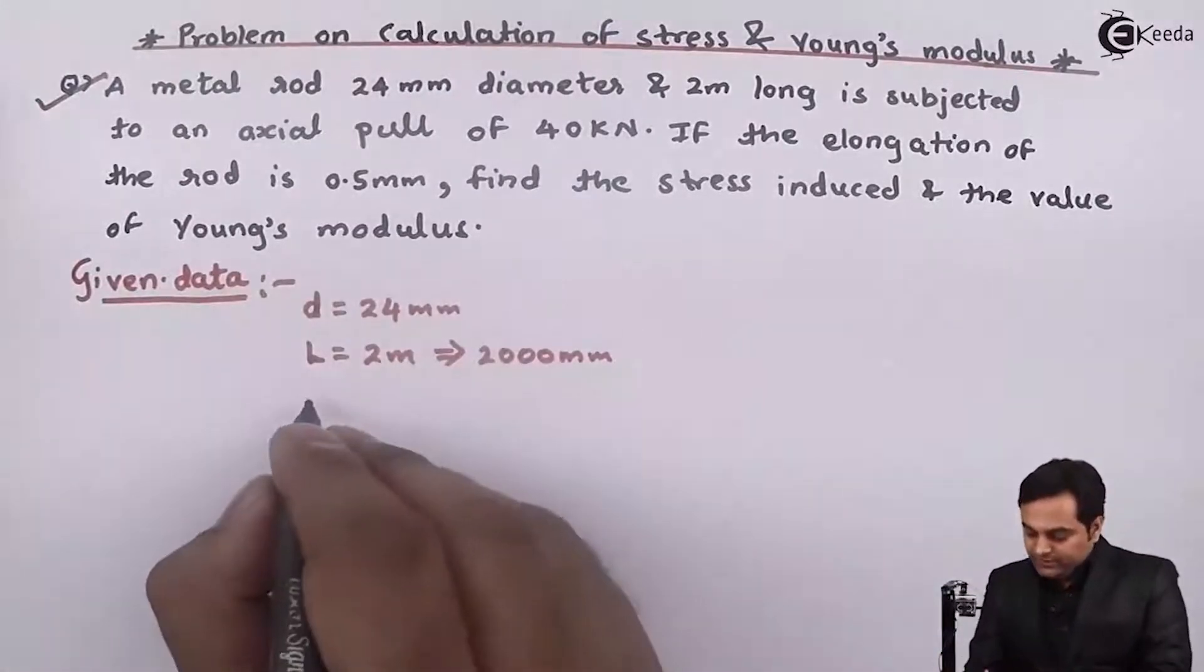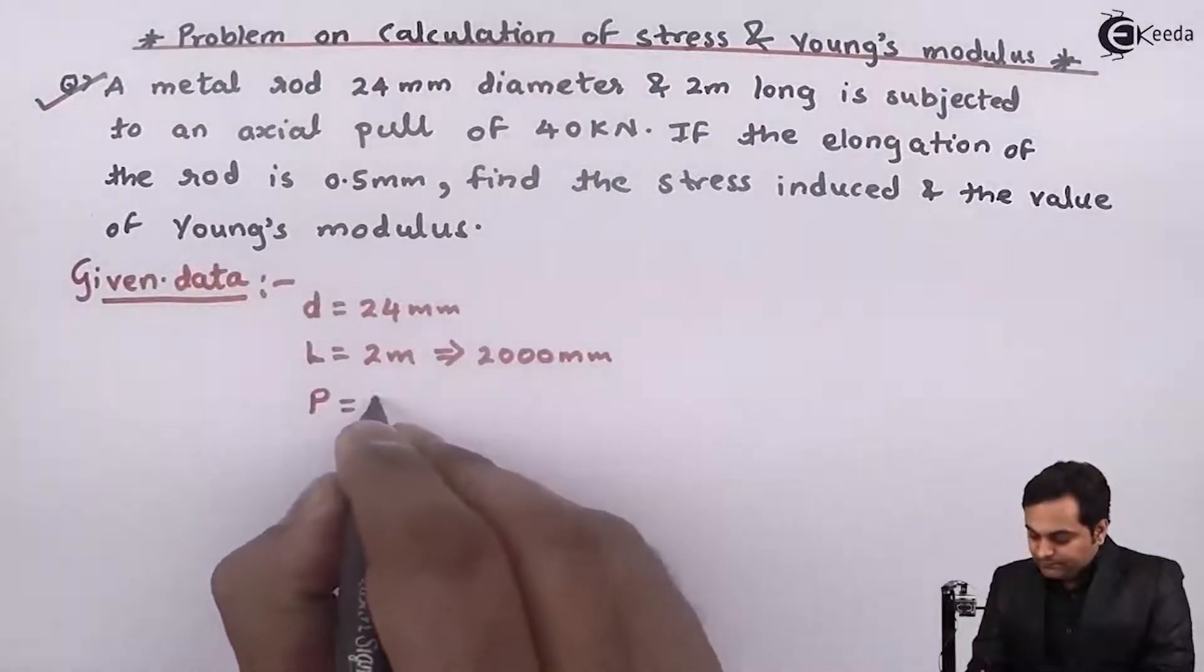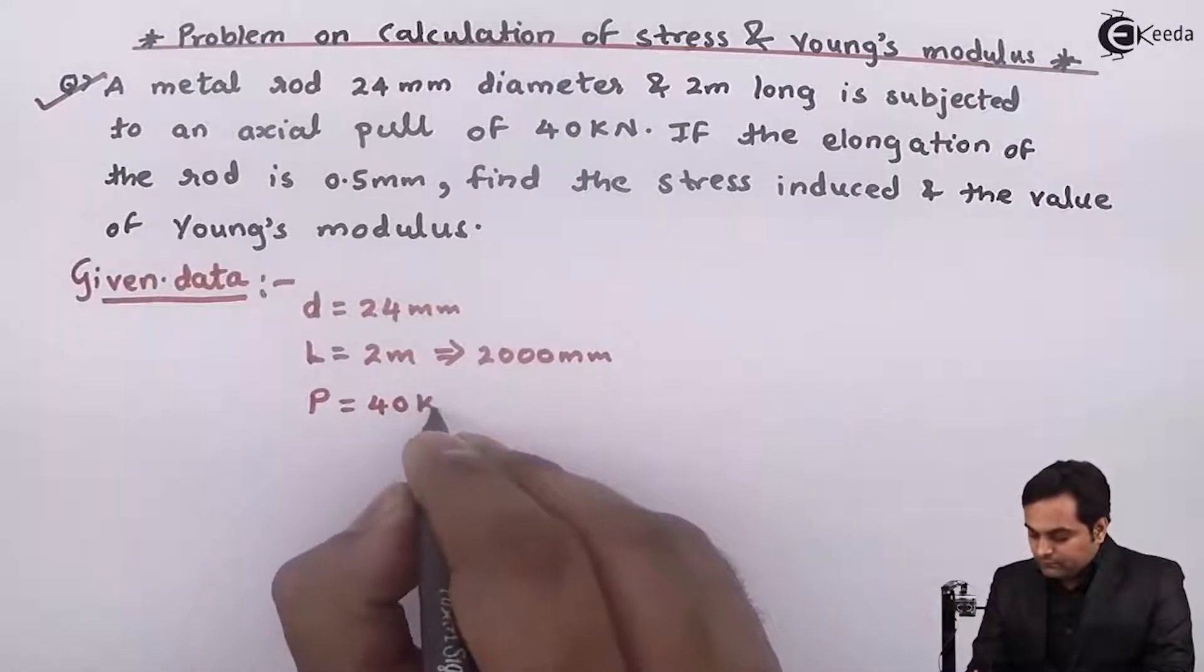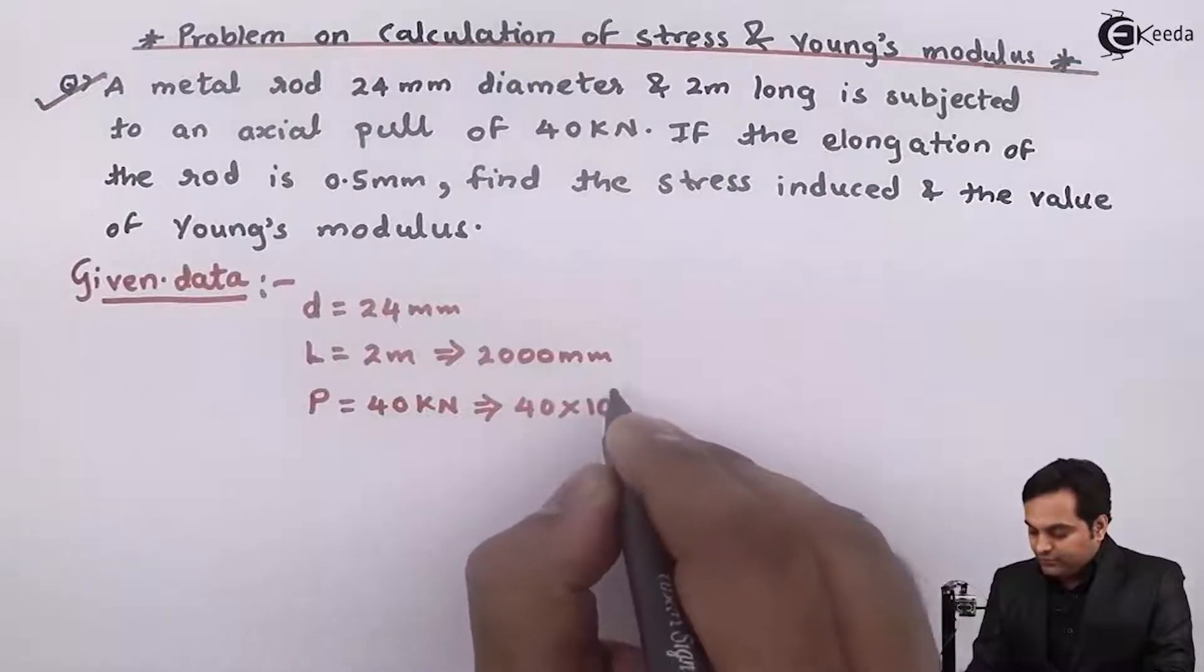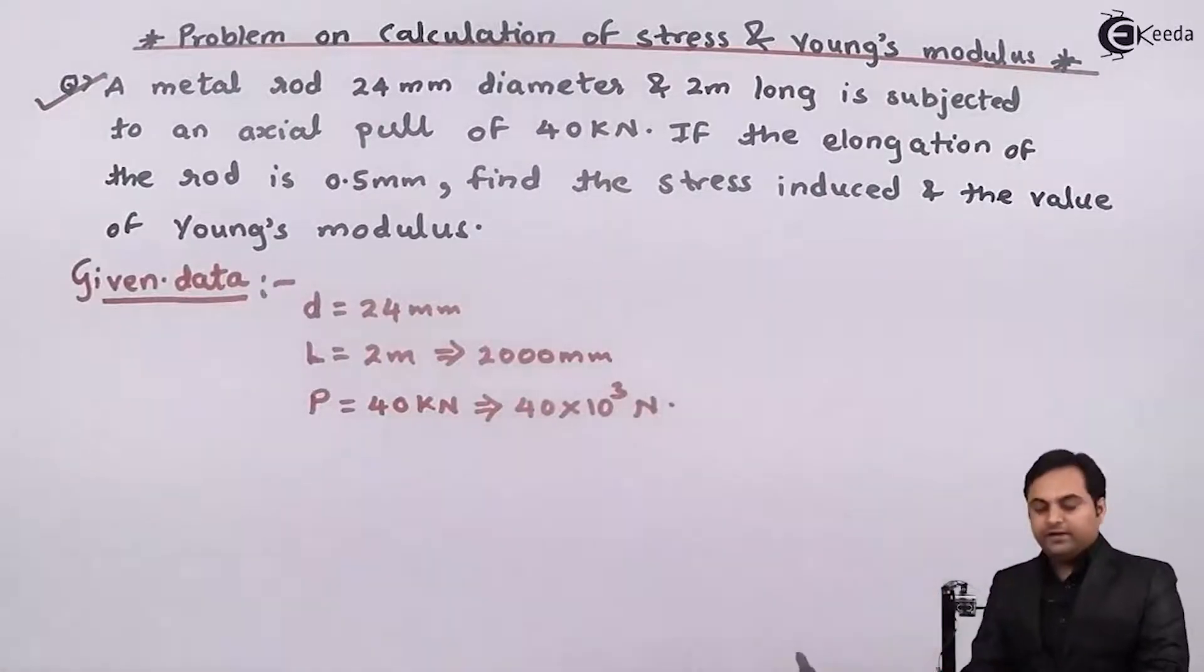It is subjected to an axial pull of 40 kilonewton, load is given. So I am converting load also in terms of Newton by multiplying it by thousand.